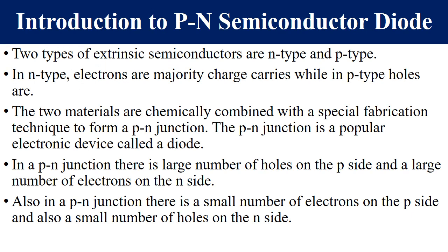A recap on intrinsic and extrinsic types of semiconductors: we have two types of extrinsic semiconductors — N-type and P-type. N stands for negative, P for positive. In N-type, majority charge carriers are electrons, while in P-type, majority charge carriers are holes. The two semiconductor materials can be chemically joined using special fabrication techniques to form what we now call a PN junction or a diode. Junction simply means where the P and the N meet.